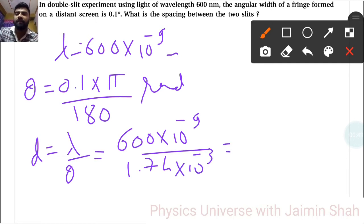So 600/1.74, that is 344.82×10^-6 meters. This distance is the spacing between the two slits.